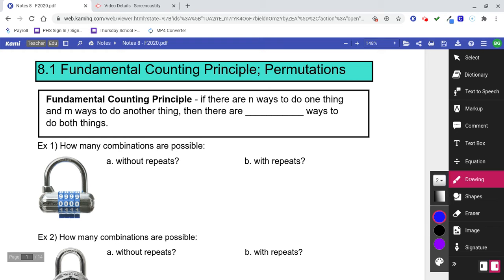8.1 Fundamental Counting Principle and Permutations. The Fundamental Counting Principle says if there are n ways to do one thing and m ways to do another thing, then there are n times m ways to do both things. I want you to really pay attention to that word 'and' - it's going to be very important. The word 'and' is going to imply multiply. And means times.